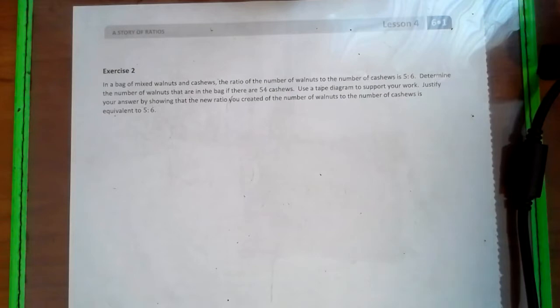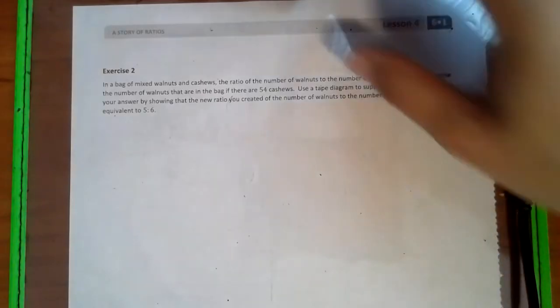In a bag of mixed walnuts and cashews, the ratio of the number of walnuts to the number of cashews is 5 to 6. Determine the number of walnuts that are in the bag if there are 54 cashews. Use a tape diagram to support your work. Justify your answer by showing that the new ratio you created of the number of walnuts to the number of cashews is equivalent to 5 to 6.